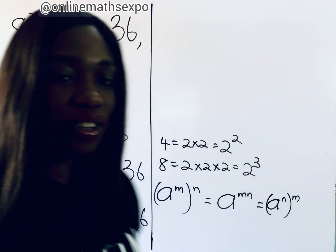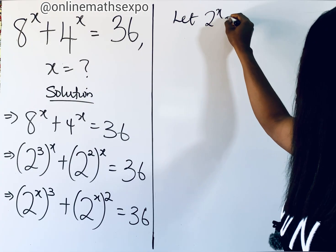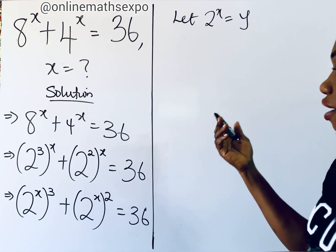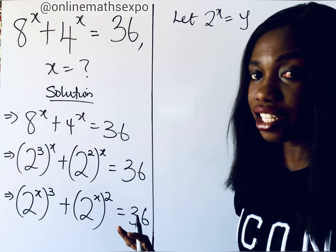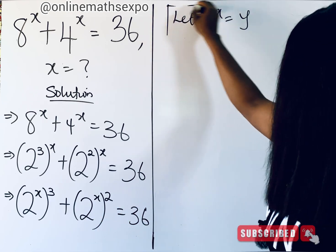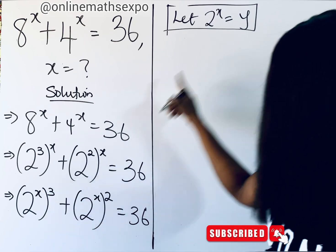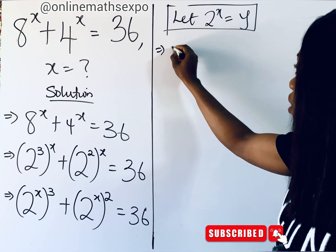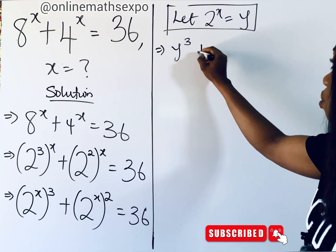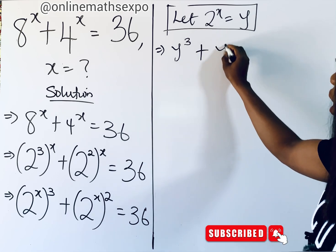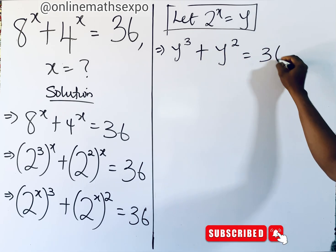Simplifying further, we let 2 to the power of x be equal to a variable y, since these two expressions are the same. So the first term is replaced with y cubed and the second term with y squared, giving us y cubed plus y squared is equal to 36.